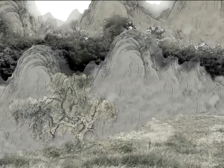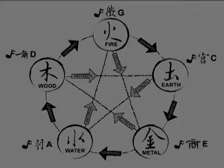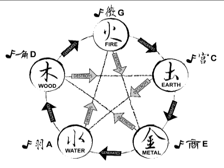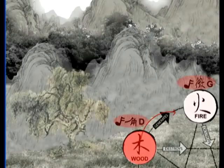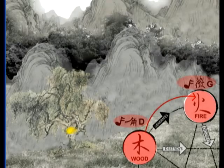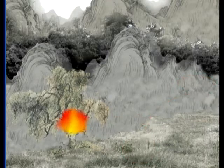The output music from the filter is visualized in the form of a traditional Chinese painting. The correspondence between musical notes and features of the painting is based on the five-element theory. The sequence of notes played generates and destroys objects in the painting according to the five-element relationships.